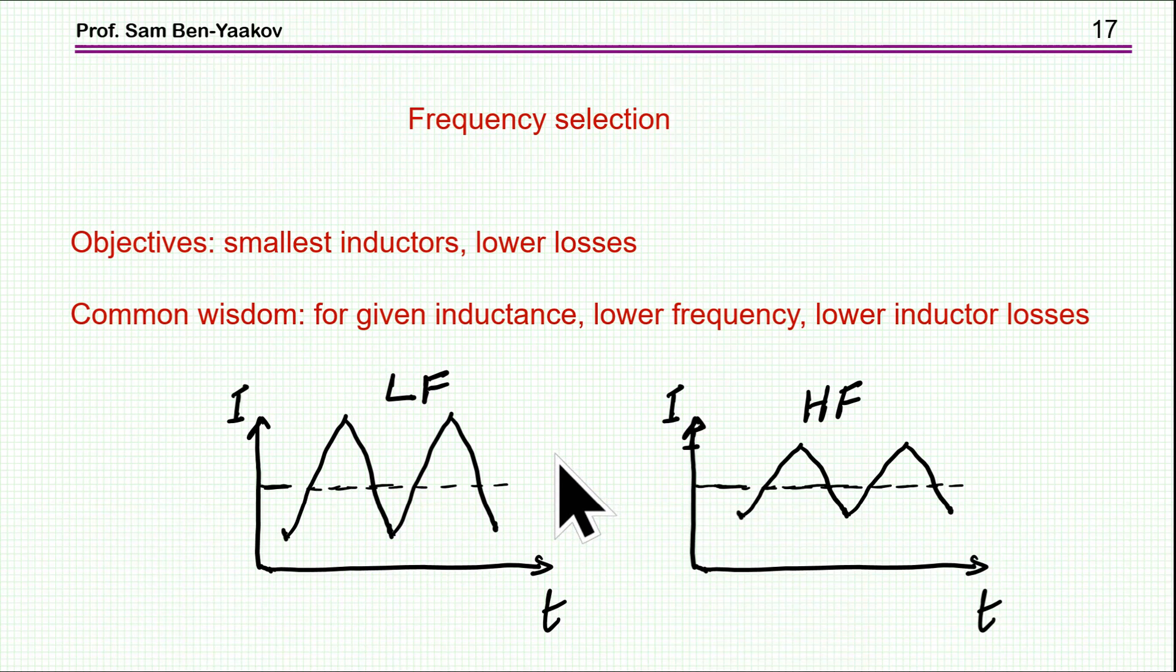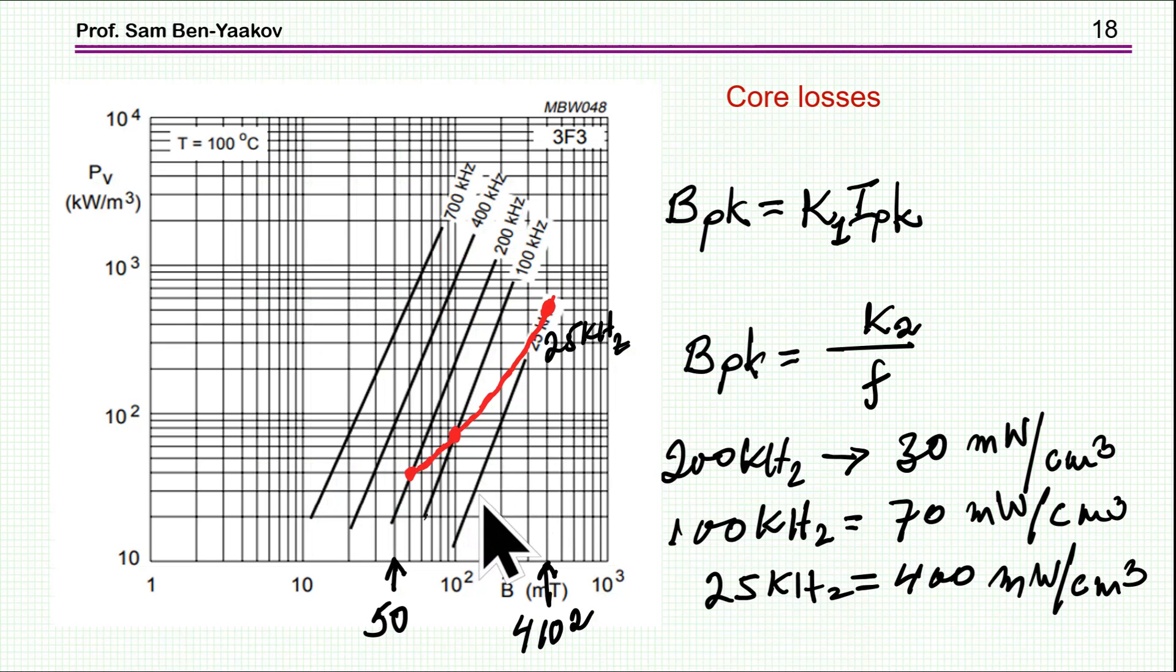This is a typical loss plot for a ferrite material, in this case 3F3 of Ferroxcube. Here is the power loss in kilowatts per meter cube, which is like milliwatts per centimeter cube, which is more reasonable.